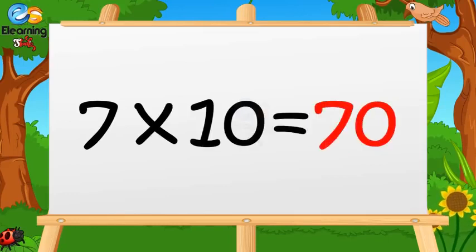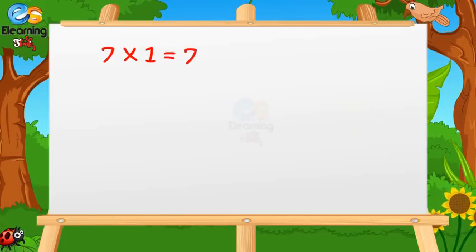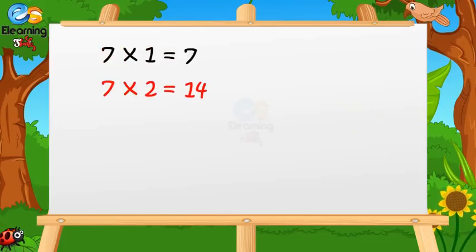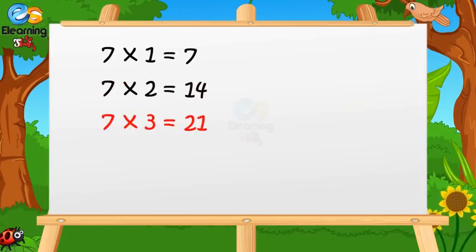7 ones are seven. 7 twos are fourteen. 7 threes are twenty-one.